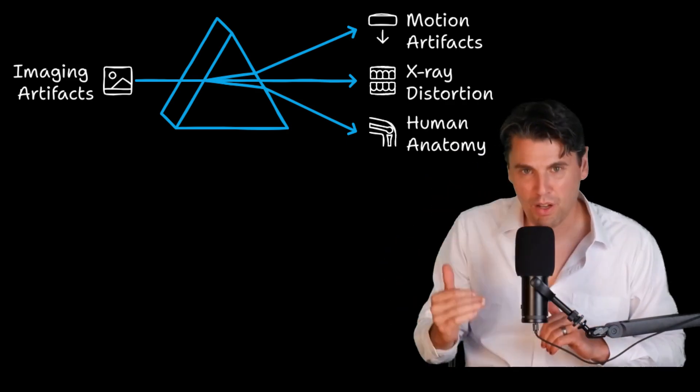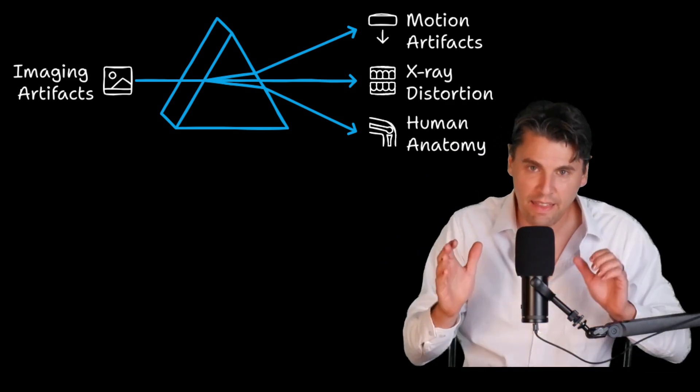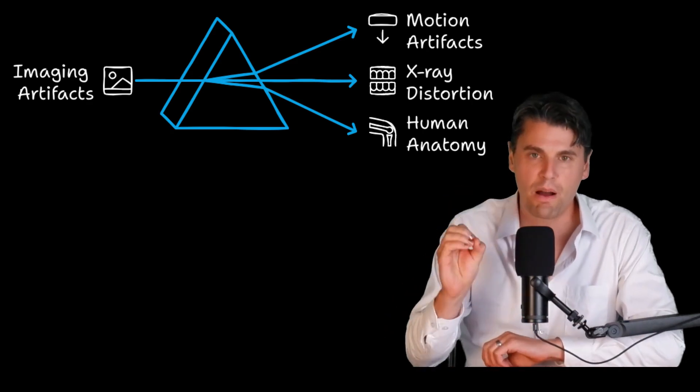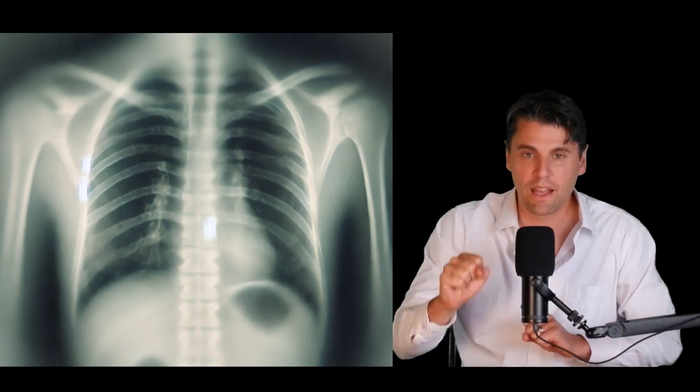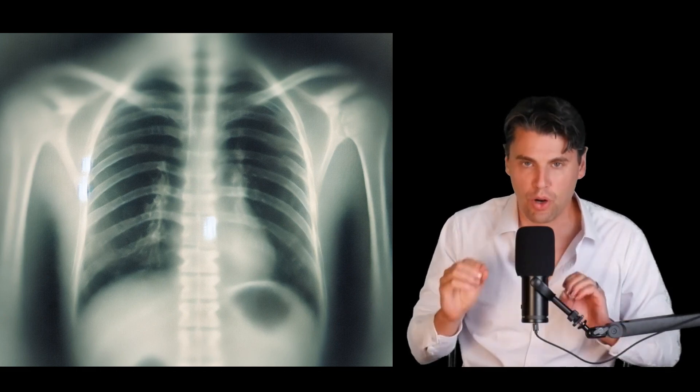We're going to go through different types of artifacts. How are they caused? And then what is the resultant image effect? First off, we've talked about motion before. Things are a little simpler in x-ray because it's a 2D. Essentially we just have a blur in the image.